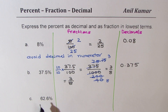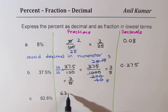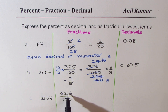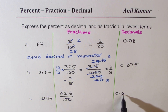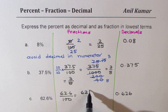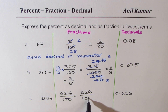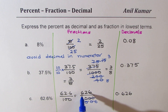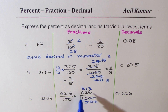Now let us look into the last example. We have 62.6%. The first step is to write this as 62.6 divided by 100. Moving the decimal two places gives us 0.626 in decimals. Since there is one decimal place, we multiply by 10 in both numerator and denominator, and we get 626 over 1000.